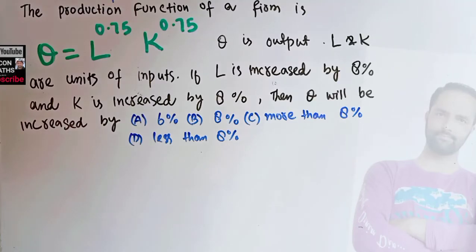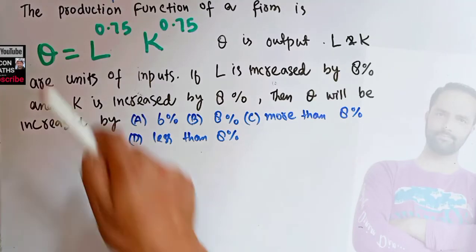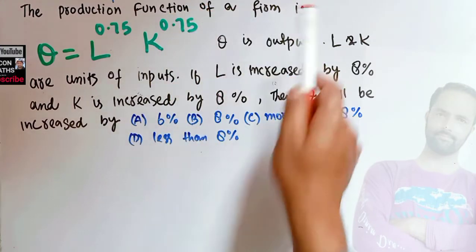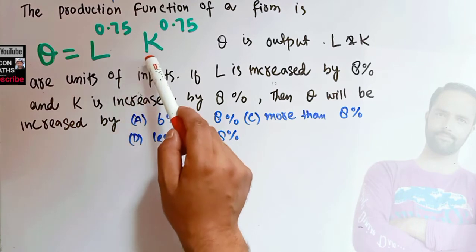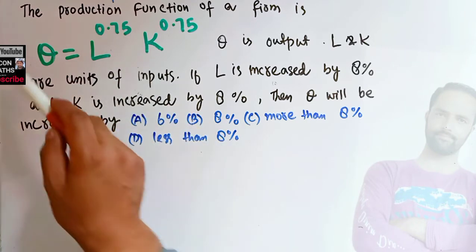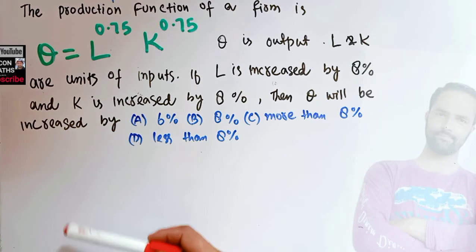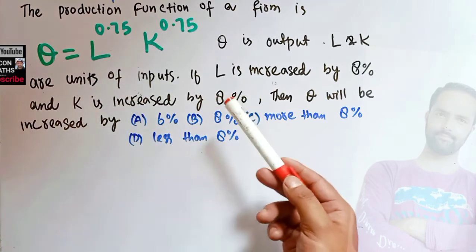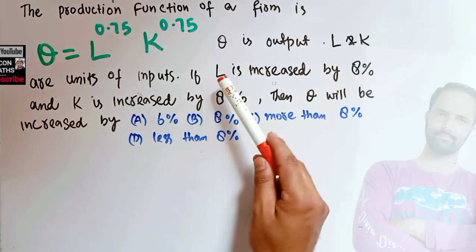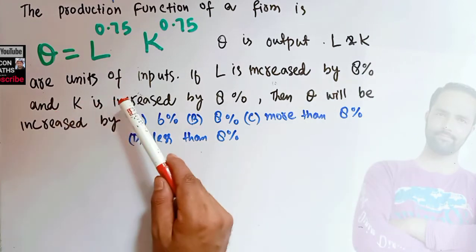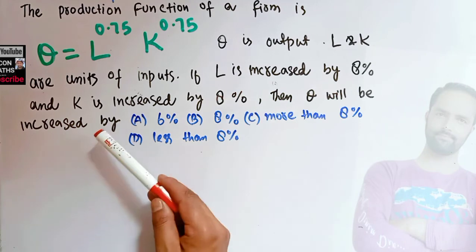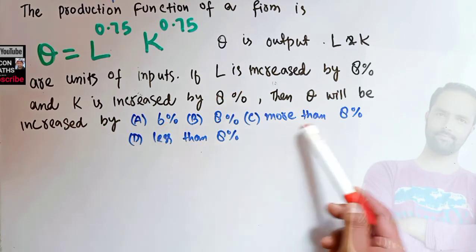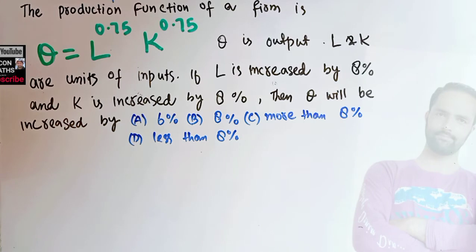In this video we will solve a problem on the production function. The question is: the production function of a firm is given as Q = L^0.75 × K^0.75, where Q is the output and L and K are the units of labor and capital — the inputs. If labor is increased by 8% and capital is also increased by 8%, then output will be increased by: 6%, 8%, more than 8%, or less than 8%?